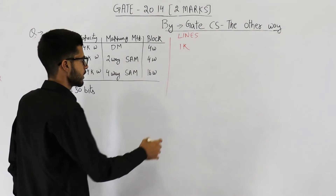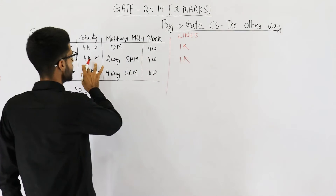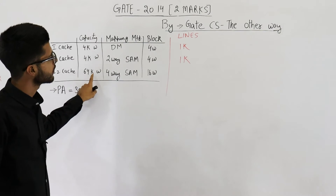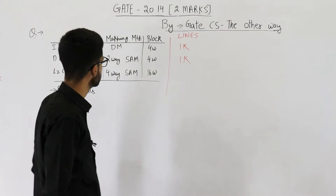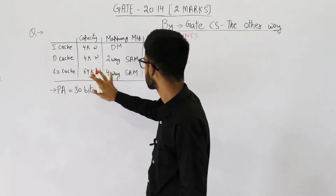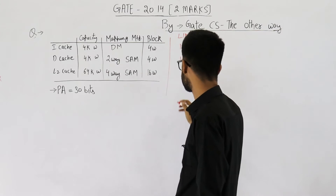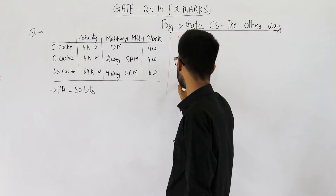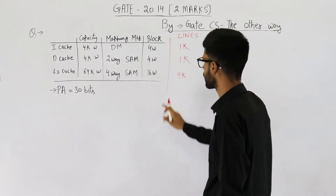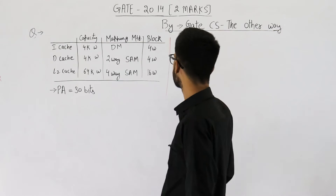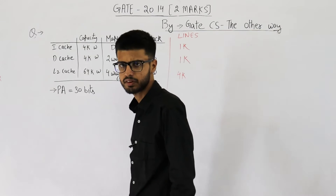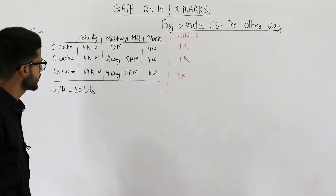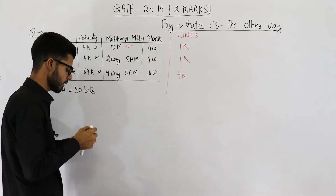The D-cache also has 1K lines because the cache size and block size are the same as the I-cache. For L2 cache, the size is 64K words and block size is 16 words, so the number of lines = 64K divided by 16 = 4K lines. Now let's focus on the I-cache, which uses direct mapping.